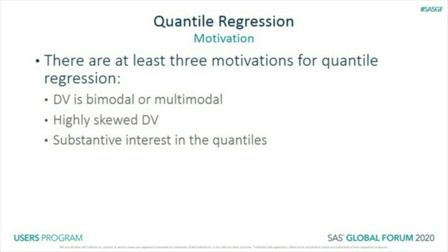The dependent variable might be bimodal or multimodal — when you have a dependent variable shaped like that, you usually don't want to use the mean or any measure of central tendency. If you have a highly skewed dependent variable like income, sales, or anything with money, we always look at median income. You don't hear mean income talked about much — you hear median.